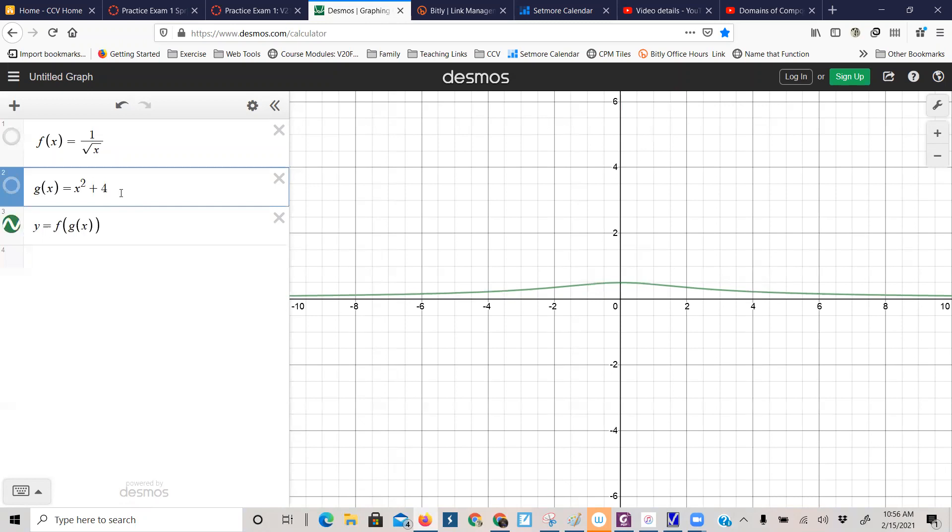So then, when is x squared plus four less than or equal to zero? Well, if you think about the algebra, I'm basically solving this inequality. I'm saying when does x squared plus four, when is that less than or equal to zero, because this says x has to be greater than zero for the domain,